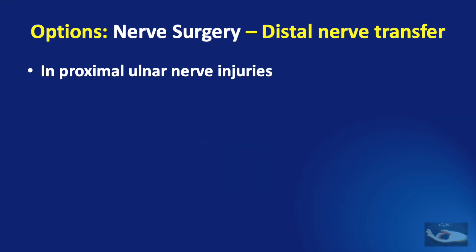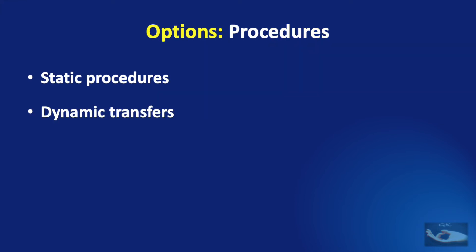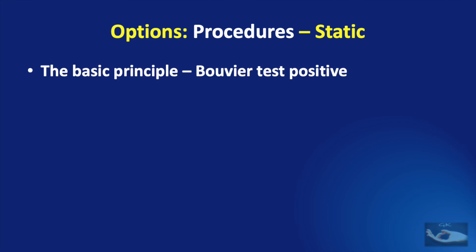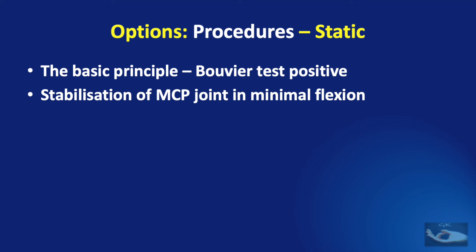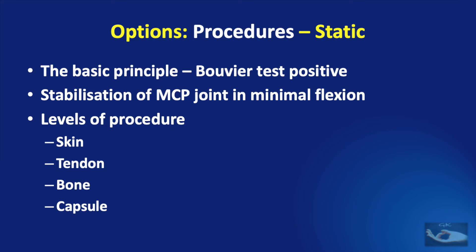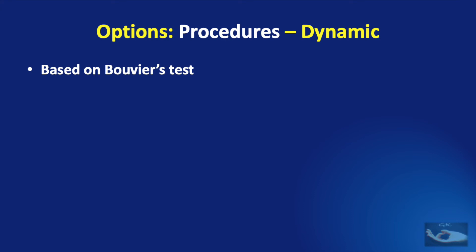When the motor end plates of the intrinsic muscles are destroyed due to chronicity or injury, nerve surgery may not be useful and other procedures — static or dynamic — are indicated. Static procedures are done when the Bouvier test is positive; they stabilize the MCP joint in minimal flexion, allowing the long extensors to extend the IP joints. This stabilization can be done at the level of the skin, tendon, bone, or joint capsule. Dynamic procedures are indicated in certain Bouvier test situations, and details will be covered in a later video.